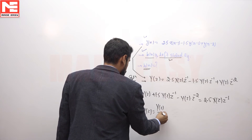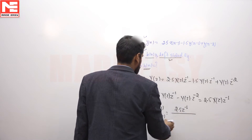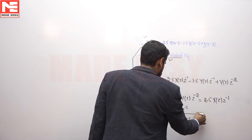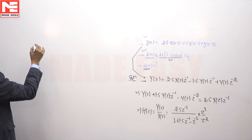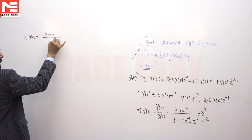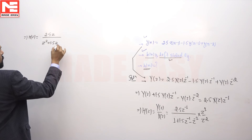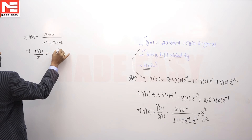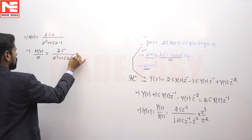H(z), which is the ratio of Y(z) and X(z), will be equal to 2.5·z⁻¹ divided by (1 + 1.5·z⁻¹ − z⁻²). We multiply the numerator and denominator by z², giving H(z) = 2.5z / (z² + 1.5z − 1). We then write H(z)/z = 2.5 / (z² + 1.5z − 1).